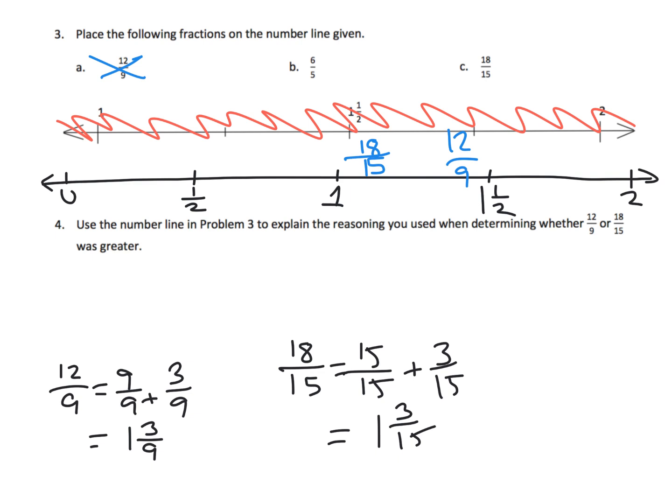And that immediately allows us to compare 12 ninths and 18 fifteenths, because we can see that 12 ninths is larger than 18 fifteenths, because 12 ninths is to the right of 18 fifteenths on the number line.